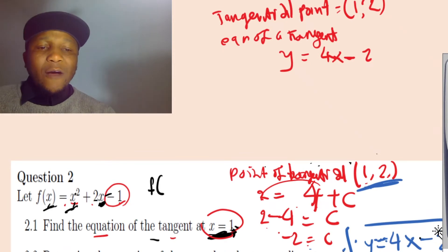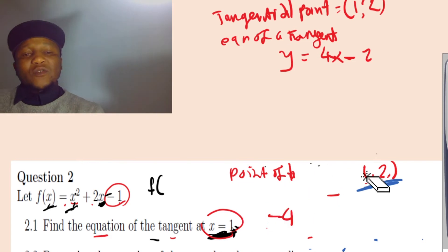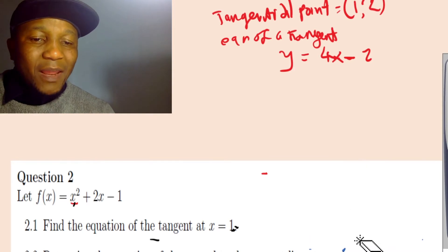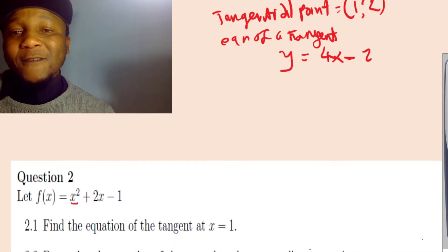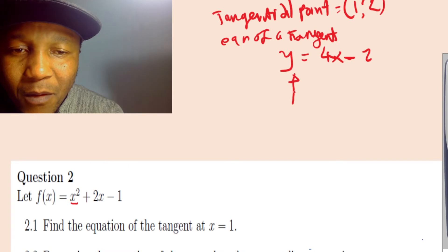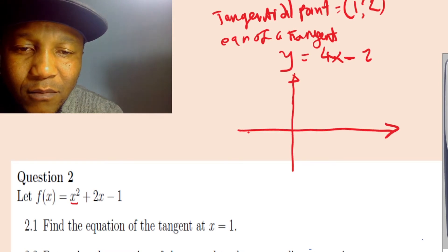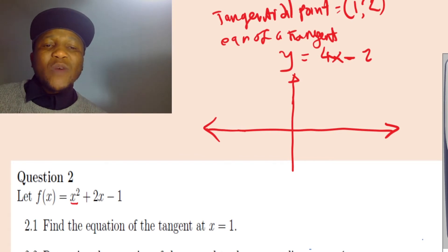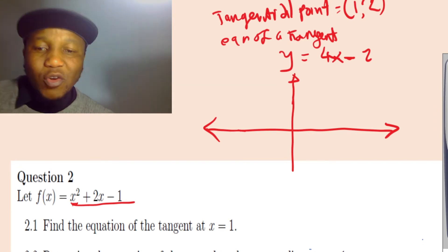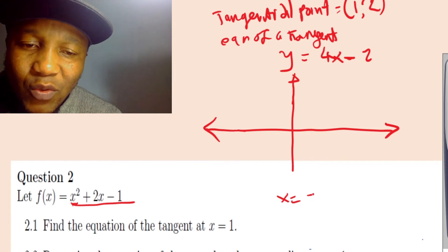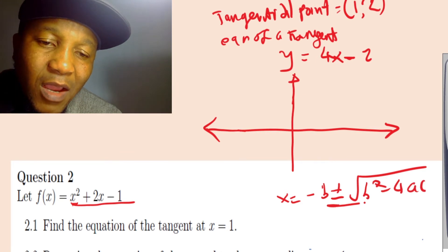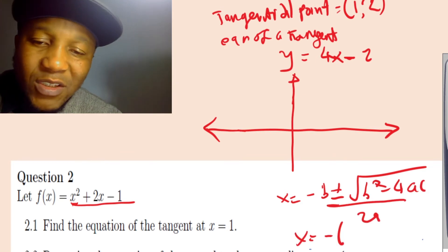Now we're done with the first part. For the second part, let me show you something using a graph so it makes more sense. Let me draw a simple graph using the information given. The tangential point is (1, 2). Before drawing the tangent, let's draw the original curve using the quadratic formula: x = (-b ± √(b² - 4ac)) / 2a.